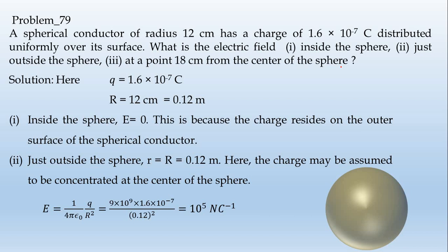There is a spherical conductor, which has a radius. The charge of the value is 1.6 into the power minus 7 coulomb. If you have a conductor, the charge on the surface is the most important thing. This is the condition.